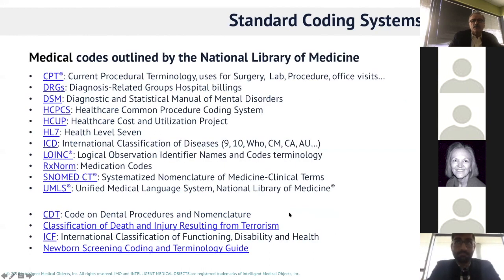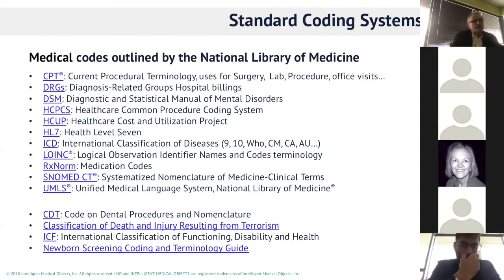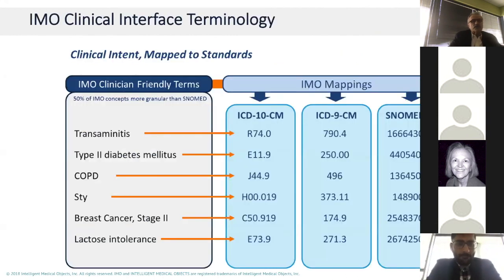These are additional coding systems we covered last week: CPT, DRG, DSM, HCPCS, and so on, ordered by importance. I also started identifying some communication mechanisms. Now I want to go into more detail on interface terminology. Before I jump in — any questions? Does anyone want me to repeat anything from last class?